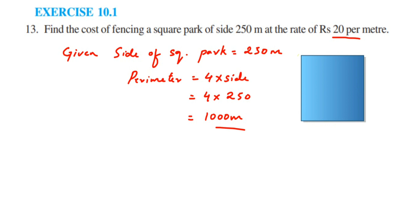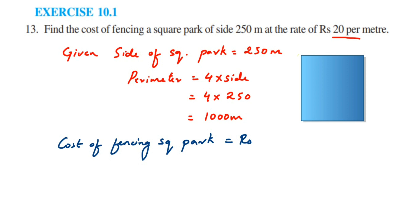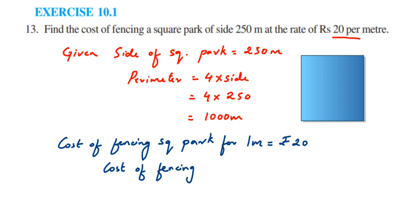Therefore, the cost of fencing the square park: for 1 meter, cost = rupees 20. So for 1000 meters, cost = rupees 20 × 1000 = rupees 20,000. The total cost will be rupees 20,000. First we found the perimeter, then we found the cost.